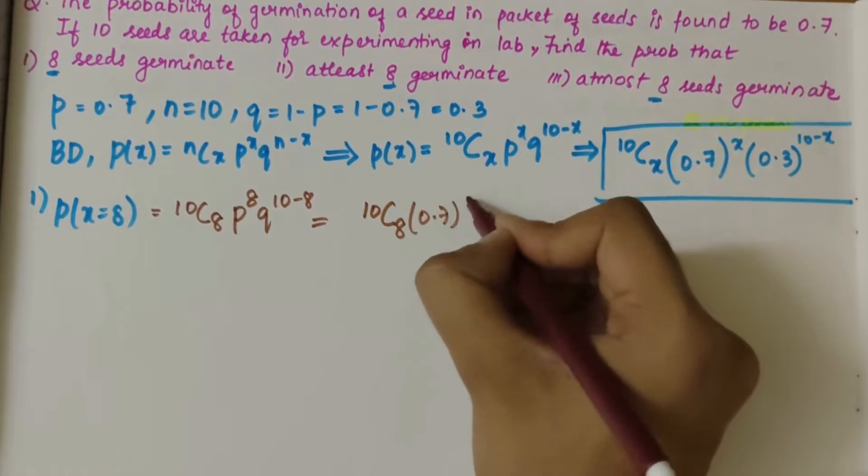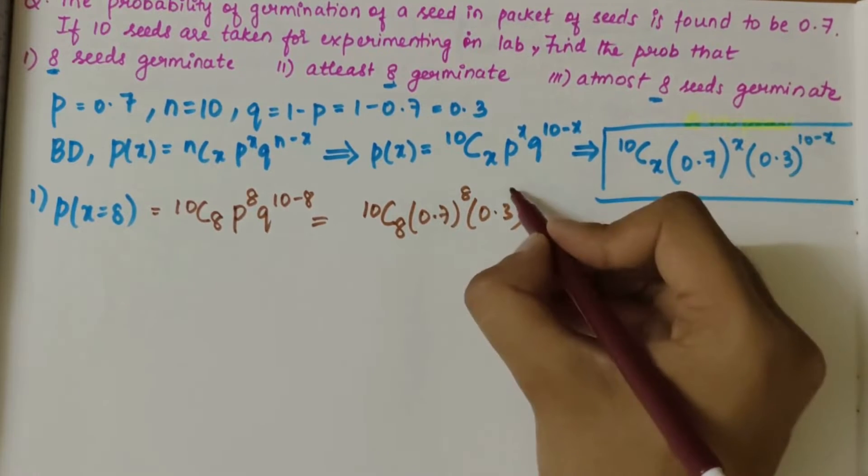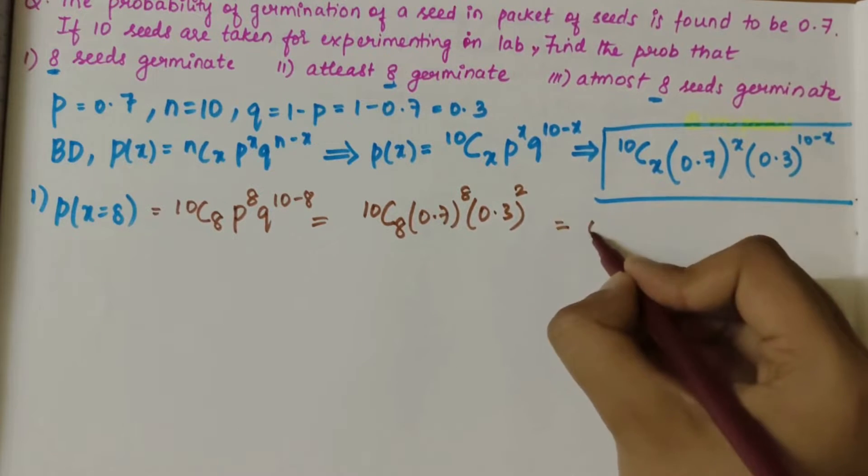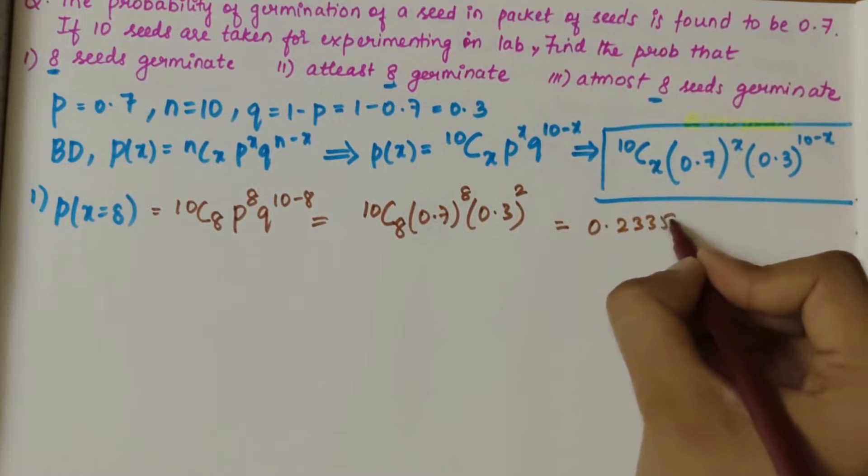0.7^8, 0.3^(10-8 is 2). So if you solve this, you'll get 0.2335.